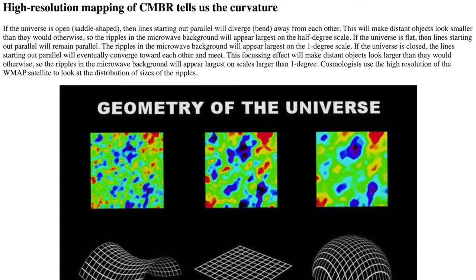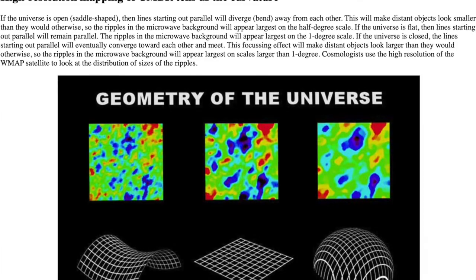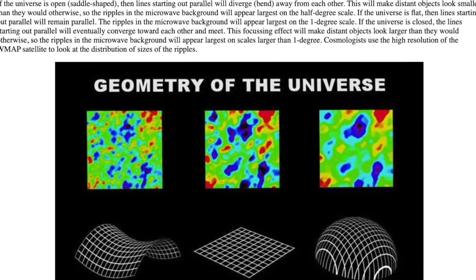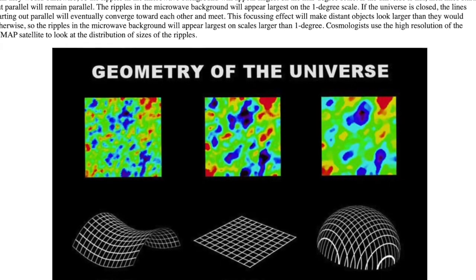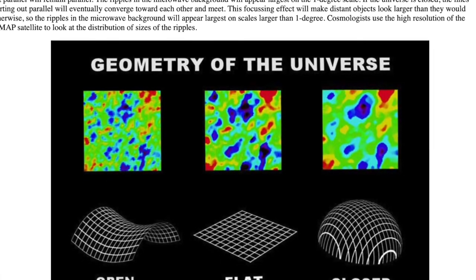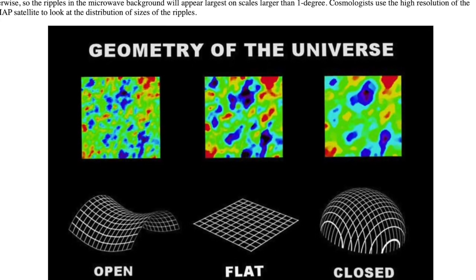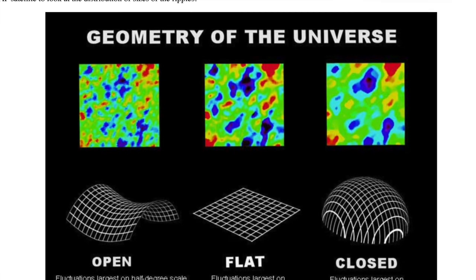An independent way to measure the overall geometry of the universe is to look at the fluctuations in the cosmic microwave background radiation. If the universe is open, saddle-shaped, then lines starting out parallel will diverge, bend away from each other. This will make distant objects look smaller than they would otherwise, so the ripples in the microwave background will appear largest on the half-degree scale.